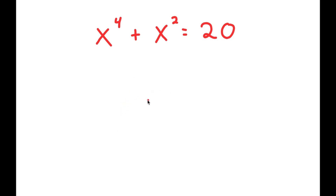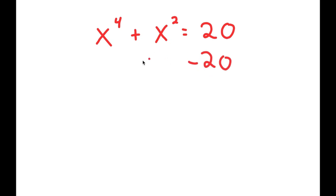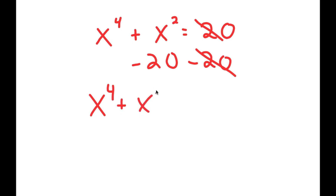In this equation, I have x to the power of 4 plus x squared is equal to 20. To solve this, I'm going to first start by subtracting 20 on both sides so we can have all our terms on one side. So I get x to the power of 4 plus x squared minus 20 is equal to 0.